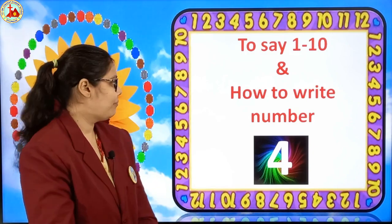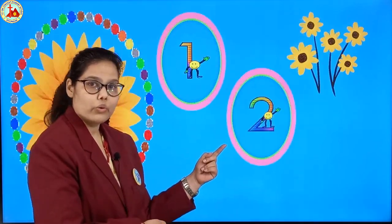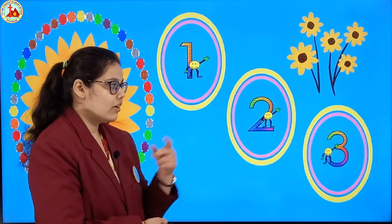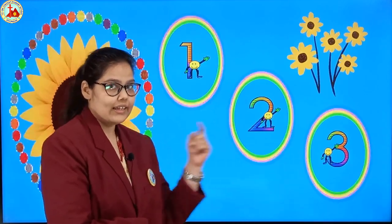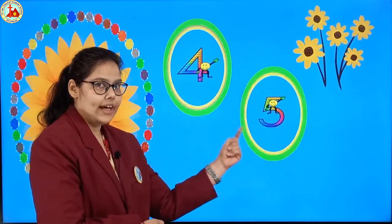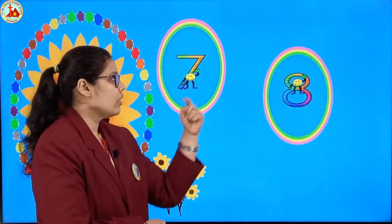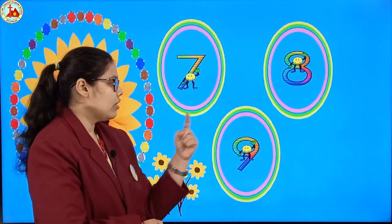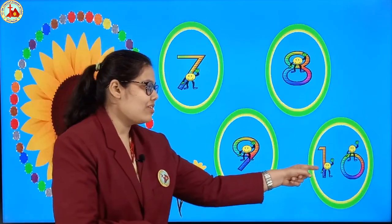Repeat after me. So our first number is 1, then 2, after 2 comes 3. 1, 2, 3. Next: 4, 5, 6. After 6 comes 7, 8, 9, and what will be the last number? Yes — 1, 0: 10.